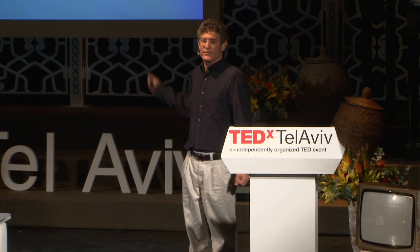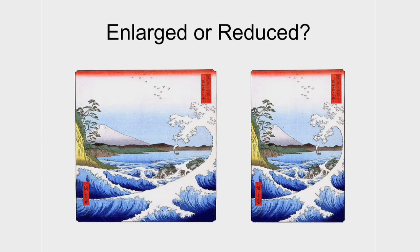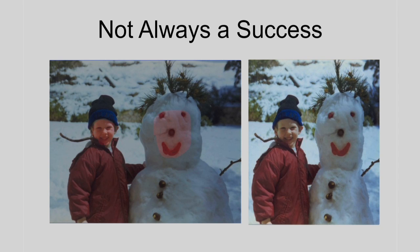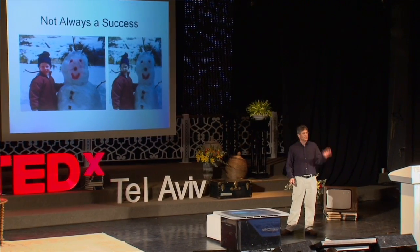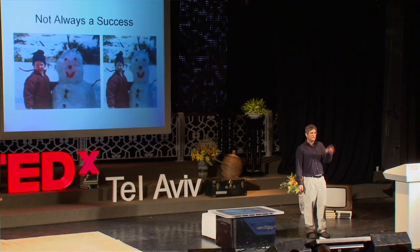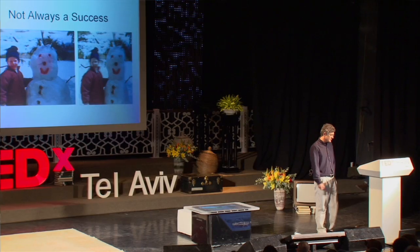Now I have a question for you — is this reduced or enlarged? You have two pictures. You can see that it has a tail, because Mount Fuji here has a steep slope and not a shallow slope. Therefore, this image was actually enlarged. It's not always a success — sometimes the seams need to move through places like someone's face. But it's very easy to correct: you just put on some scribbles and say 'protect this region,' and don't let the seams pass through it. And what you get is, of course, better results.